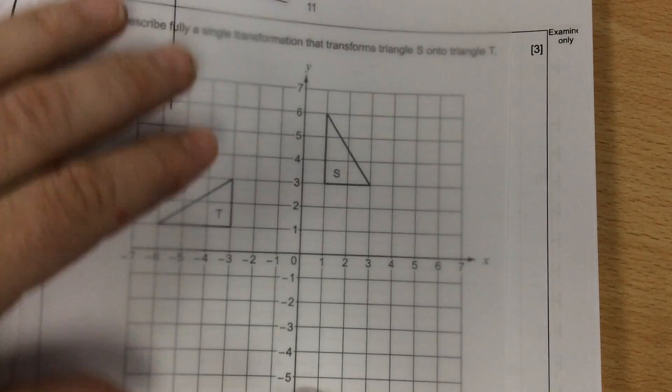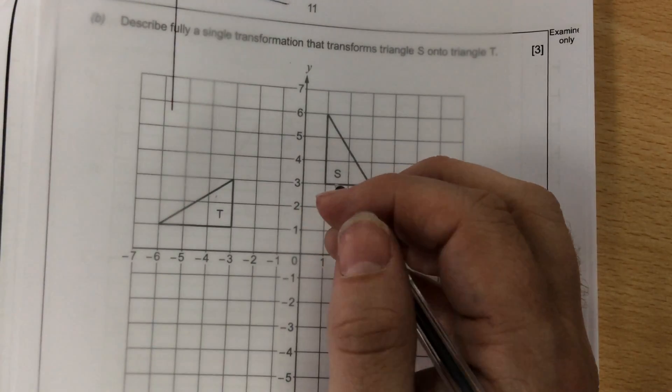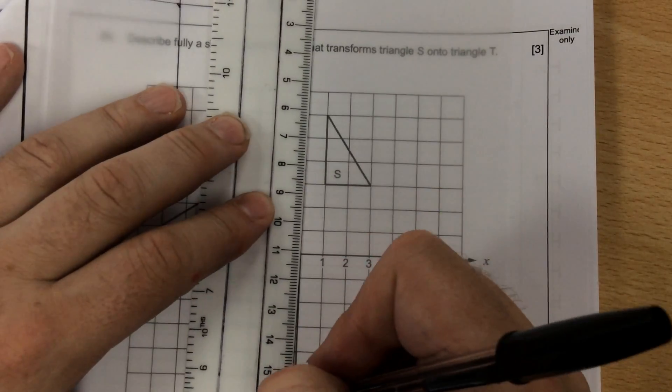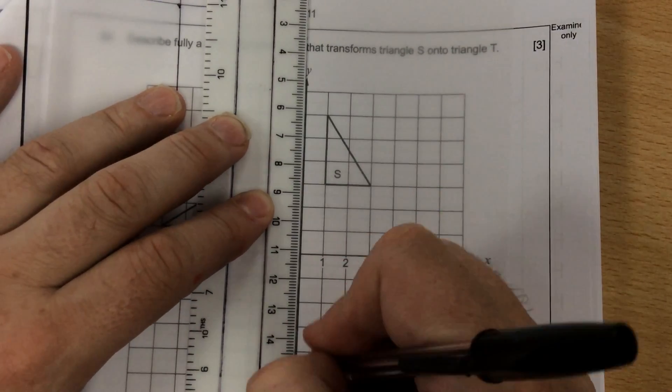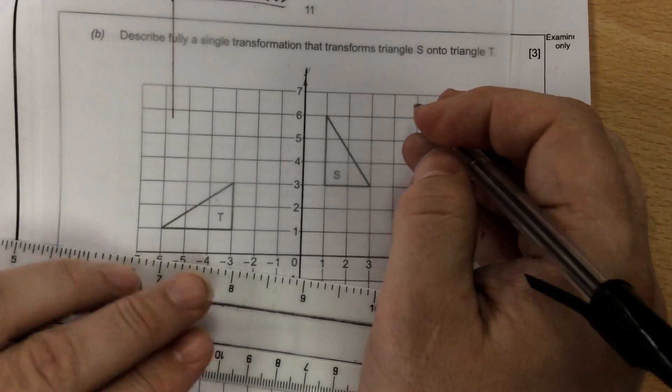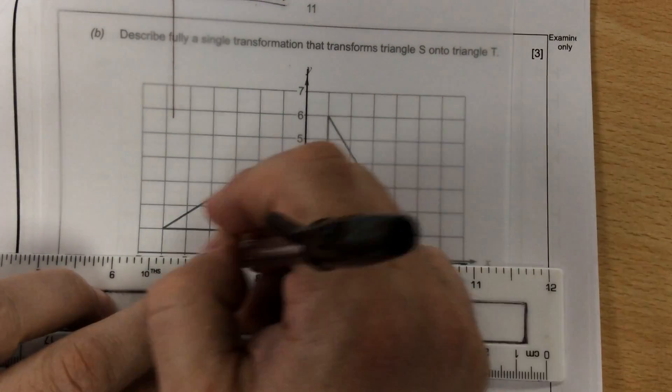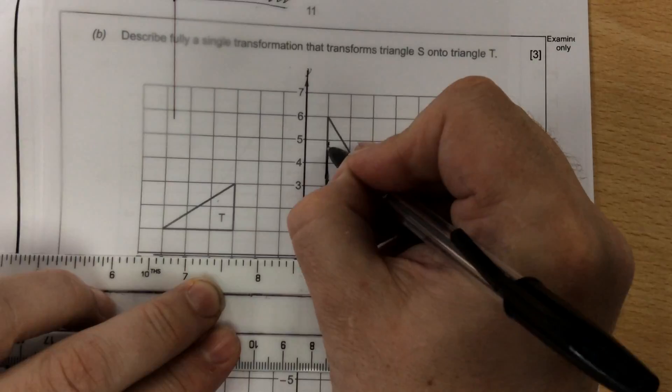So what I would do with this question is find out how far it's been twisted. I would draw the axis. I would then draw the shape on there, and I'm looking at it carefully, and I'm thinking,